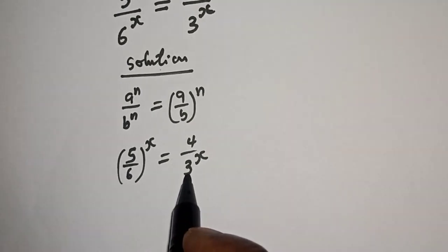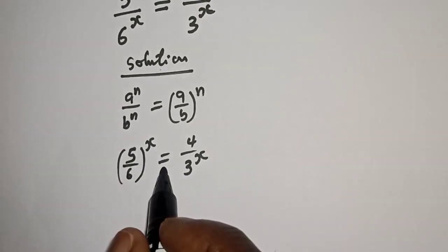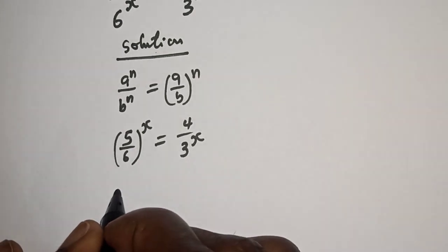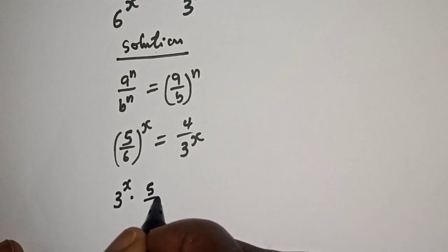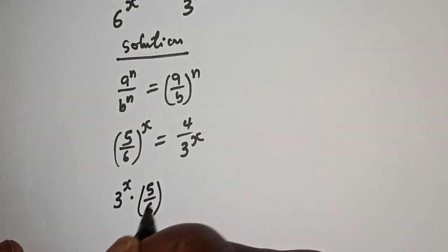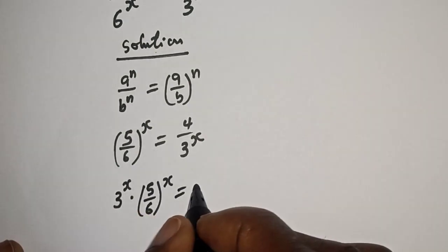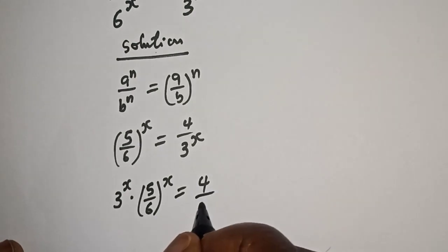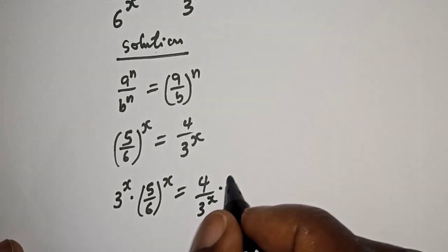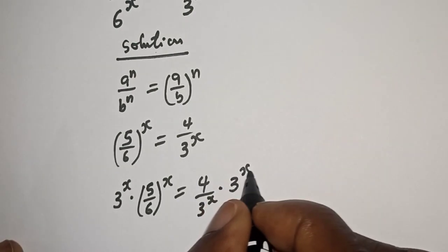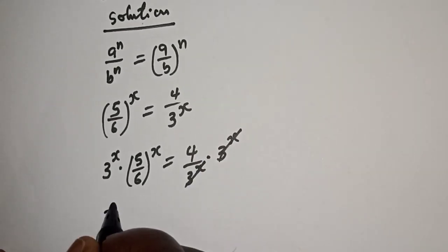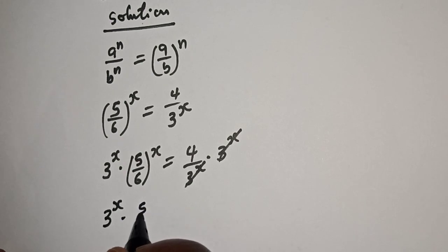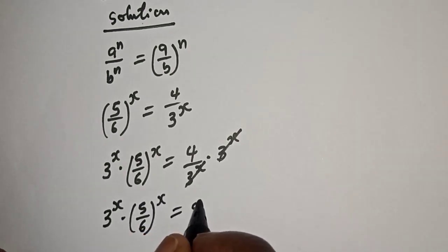Then, let's multiply both sides of the equation by 3 raised to power s. That is, 3 raised to power s multiplied by 5 over 6 raised to power s is equal to 4 over 3 raised to power s multiplied by 3 raised to power s. This will cancel, giving us 3 raised to power s multiplied by 5 over 6 raised to power s is equal to 4.